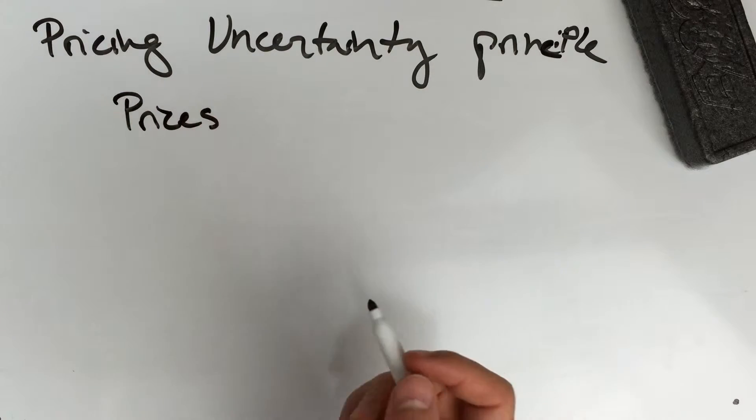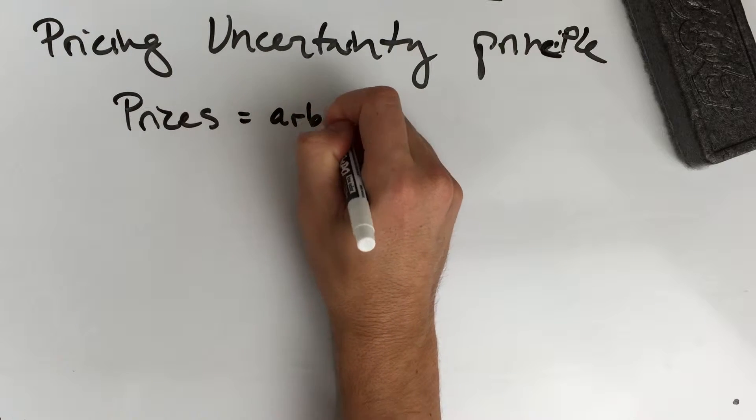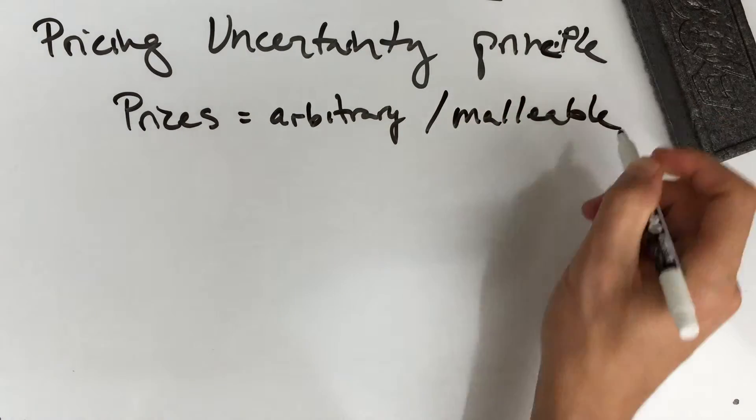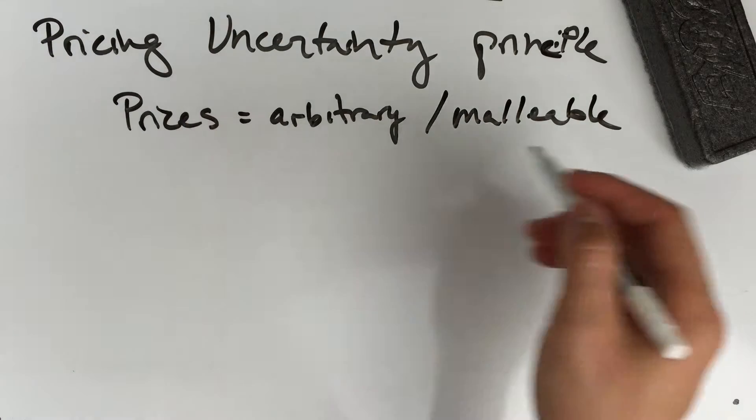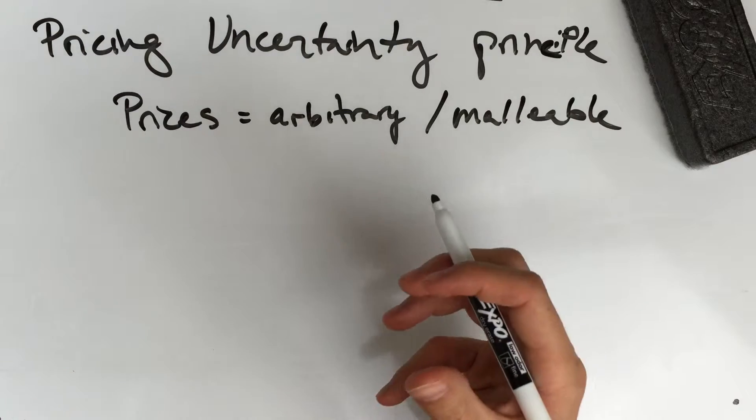Arbitrary and malleable—fancy words to say you can set a price at anything and you can adjust that price. Realistically, that doesn't mean a transaction is going to occur.